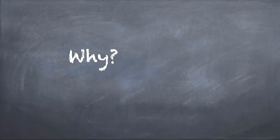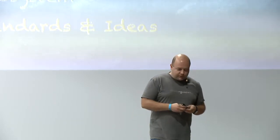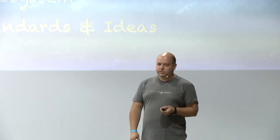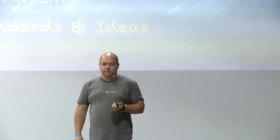За какво всъщност ще говорим? Ще говорим за open source и защо въобще бихме го използвали в голяма фирма. Отговорът всъщност е доста прост — парите. Всичко, което се прави в големите фирми, е заради парите. И как можем да използваме open source, за да изкараме пари? Има доста начини: с консултинг, т.е. поддръжка или внедряване на софтуер; с vendor lock-in; с екосистеми — строене и разваляне на екосистеми; и с прокарването на стандарти и идеи.